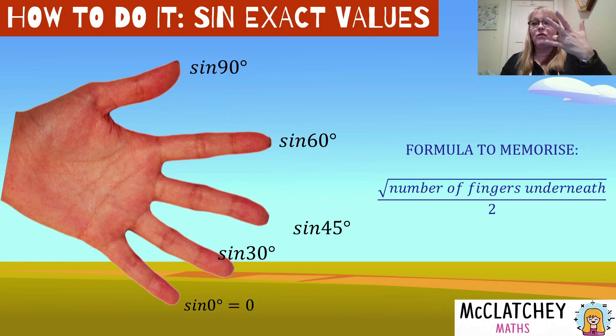Okay, let's do that with our ring finger. We hold that one in and we've got one finger underneath, the square root of one over two. We know the square root of one is just one. So that means the sine of 30 degrees is a half.